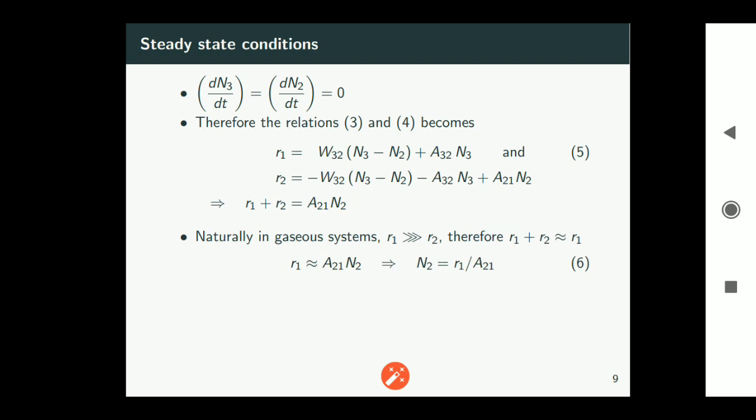So if that is the case then instead of r1 plus r2 if you write r1 itself we can get the value of n2 which turns out to be r1 divided by a21. It is represented equation 6 and this is an important relation keep that in your mind. n2 equals r1 by a21.